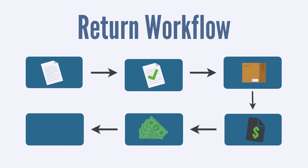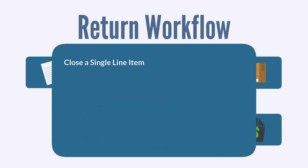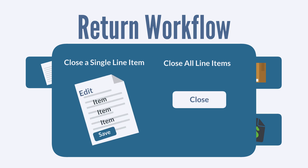The final step of return management in NetSuite is to close line items on the customer return authorization. Open the return authorization form that has items which have been fully returned and refunded. You can either close a single line item or all line items. To close all line items, select the Closed button. To close a single line item, edit the authorization form, select the line you want to close, check the Closed box, and save the form.